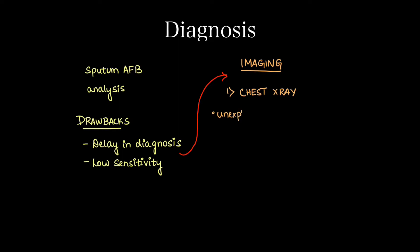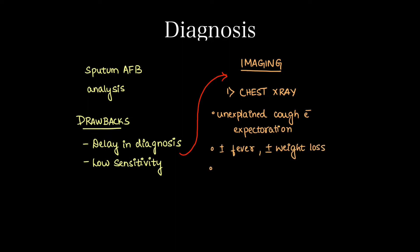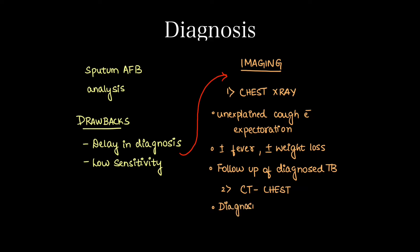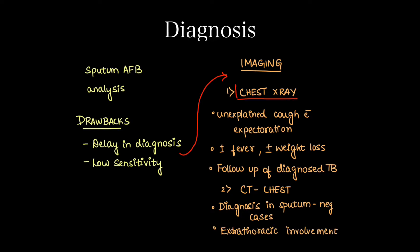The first imaging modality is chest x-ray, which is done in unexplained cough with expectoration cases. The patient might have fever with or without weight loss. This is also used for follow up of diagnosed TB cases. Next is CT chest, which is used in diagnosis in sputum negative cases and in suspected extra thoracic involvement.